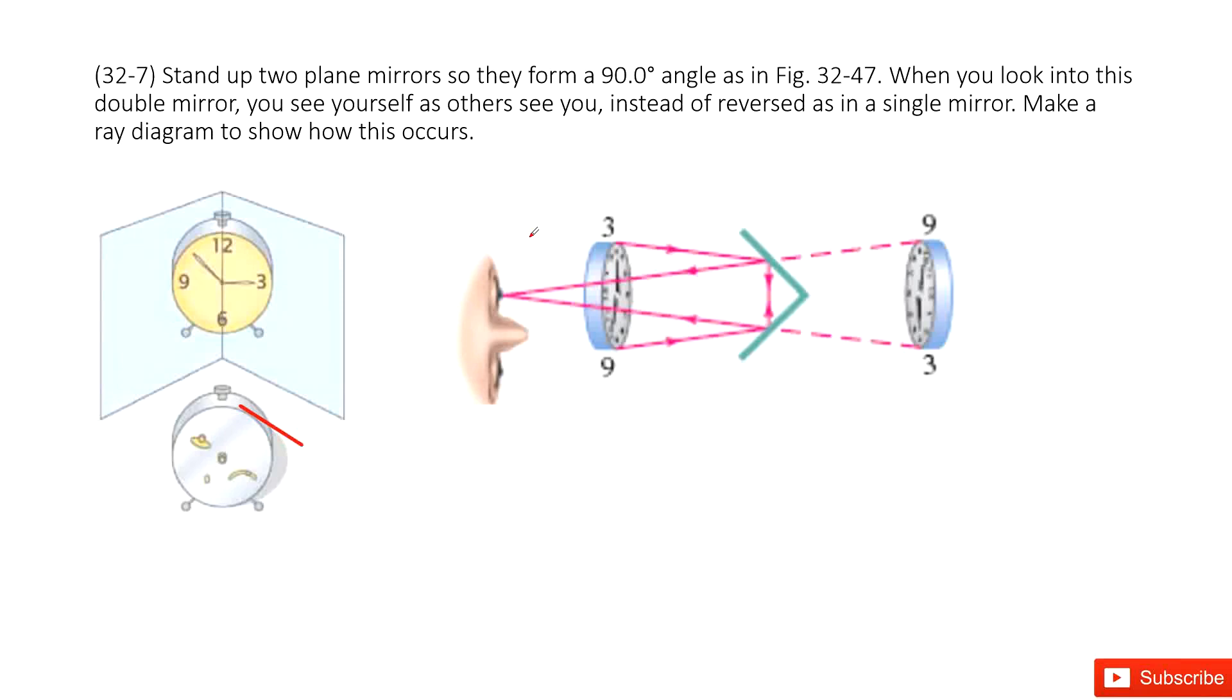Now stand up two plane mirrors so they form a 90 degree angle, just the same as the picture. When you look into this double mirror, you will see yourself as others see you instead of reversed as in a single mirror. So let's draw a picture to show how this occurs.